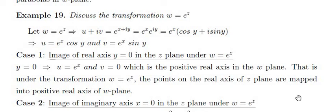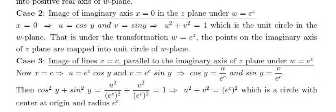Case 2: Image of the imaginary axis x = 0 under w = e^z. Substituting x = 0: u = cos y and v = sin y. Squaring and adding gives u² + v² = 1, which is a unit circle in the w-plane. So under w = e^z, points on the imaginary axis of the z-plane are mapped to the unit circle.